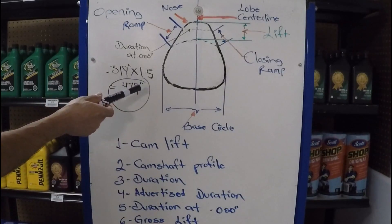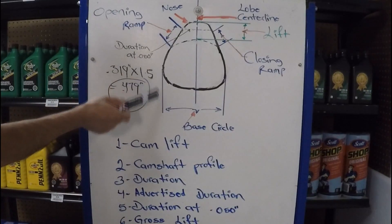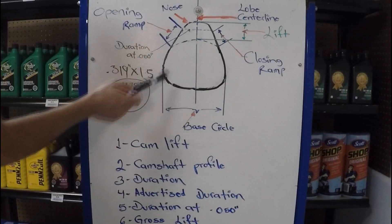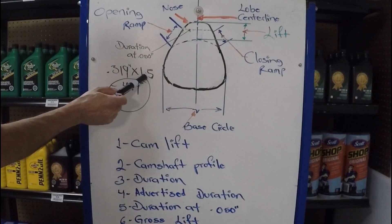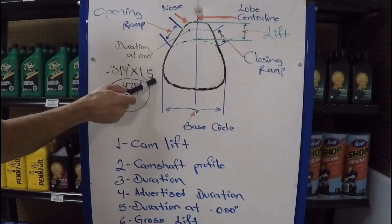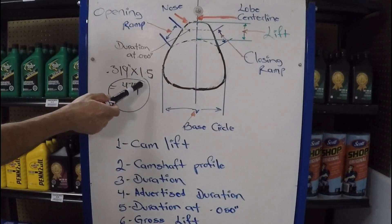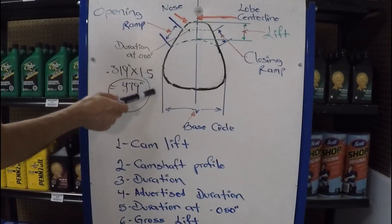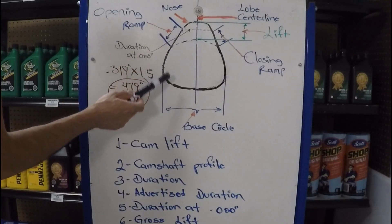Very important to look at those numbers, because you could even add more lift to your existing engine without replacing the camshaft, just going with a different rocker arm. Instead of going to the 1.5, go to the 1.6, and that will give you more lift. The duration will remain the same, but you'll have more lift, so it'll give you a little bit more torque.